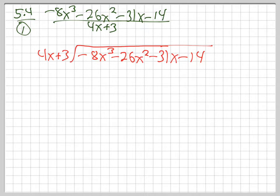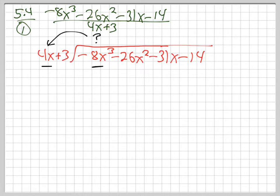Now where do we look? We don't worry about the whole thing at once — just like when we did the numbers. We just look front and front. That'll be the theme. We're always looking front to front and saying, what could I put up here? What times the front will exactly match the front? What times 4x will exactly match negative 8x³? Same sign, same everything — identical match.